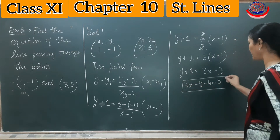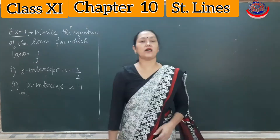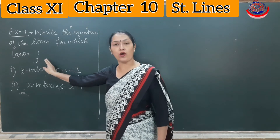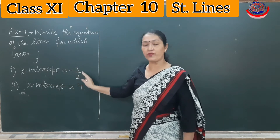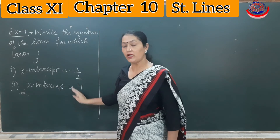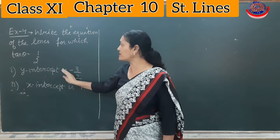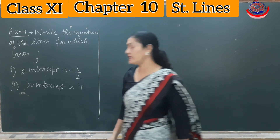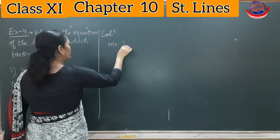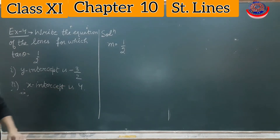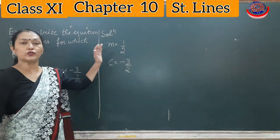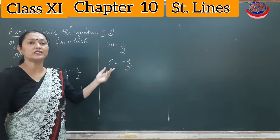Example 4 has two cases. In the first case, tan θ = 1/2 and y-intercept c = -3/2. Since slope and y-intercept are given, we will use the slope-intercept form y = mx + c.